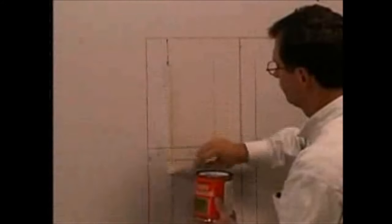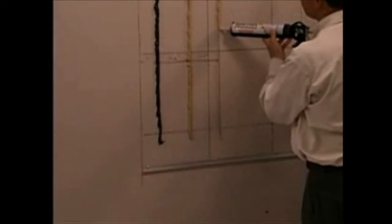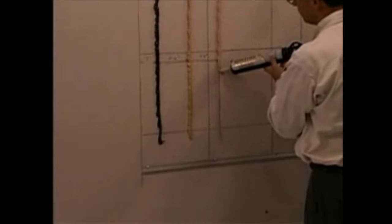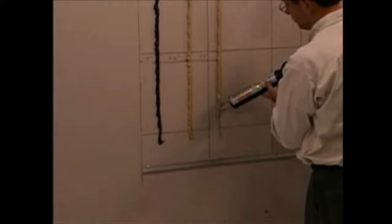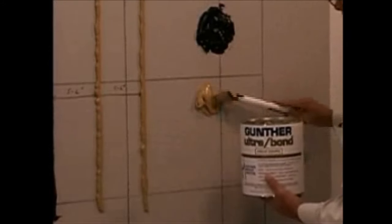We prime first with Gunther Prime & Seal where the mastic will be applied. For best adhesion from a cartridge, apply Ultra Bond in vertical beads the full length of the mirror 5 to 6 inches apart and allowing 3 inches from the mirror edge to begin or end a bead. Out of the can, apply 4 to 5 inch diameter pads for every square foot of mirror.